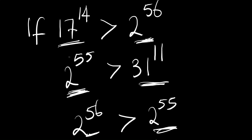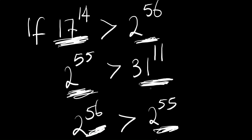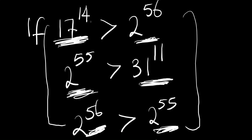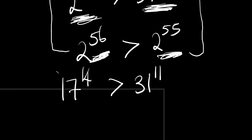Let me go through it one more time. If 17 to the power of 14 is greater than 2 to the power of 56, and 2 to the power of 56 is greater than 2 to the power of 55, and 2 to the power of 55 is greater than 31 to the power of 11, that means 17 to the power of 14 is greater than 31 to the power of 11. Amongst all these numbers, 17 to the power of 14 is actually the greatest, and 31 to the power of 11 is the smallest. So 17 to the power of 14 is greater than 31 to the power of 11.